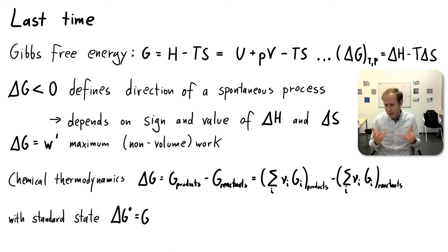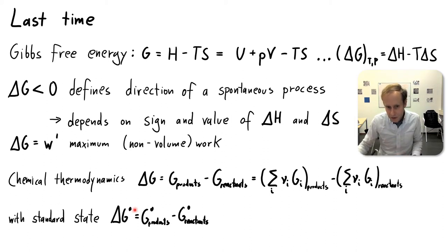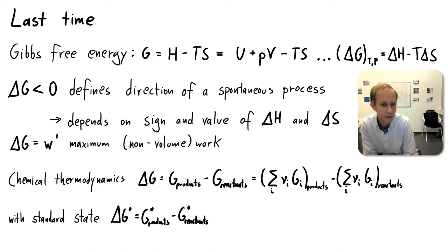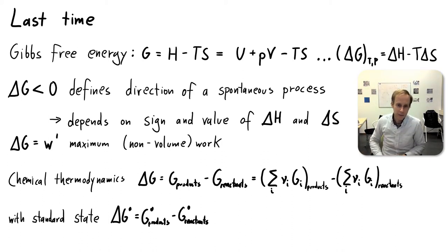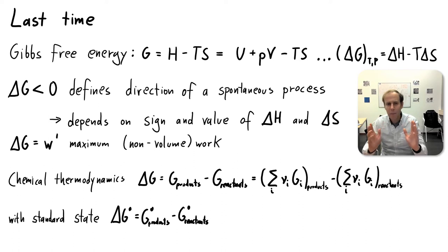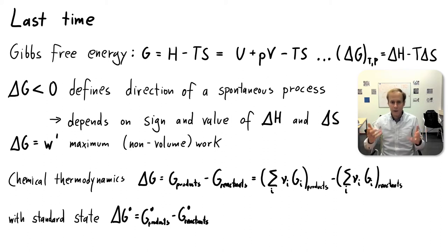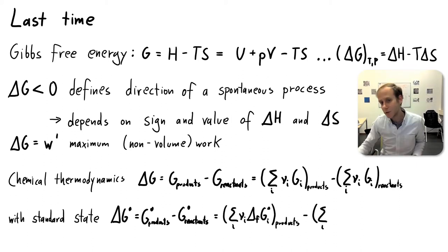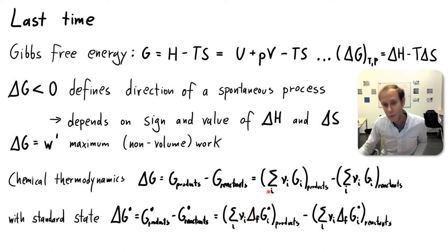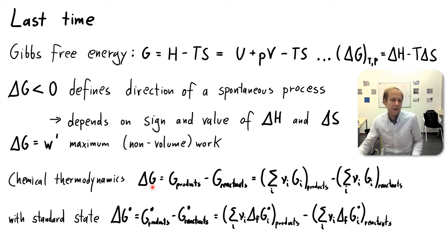We can calculate those Gibbs free energies using summations of stoichiometric coefficients times the corresponding Gibbs free energy values for each reactant and product. Then we introduced standard states, indicated by the degree symbol, typically 298 Kelvin and 1 atmosphere. These allow us to define the Gibbs free energy of formation — tabulated numbers for any molecule — which you can use to calculate the Gibbs free energy change of any reaction.